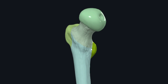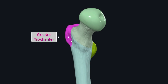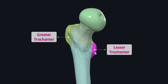At the junction of the neck and the shaft of the femur there are two eminences. The large blunt quadrilateral eminence on the proximal end is the greater trochanter, while the blunt conical projection is the lesser trochanter. The greater trochanter projects from the superior aspect of the junction between the neck and the shaft of the femur.